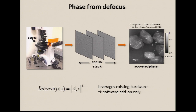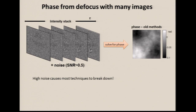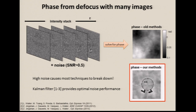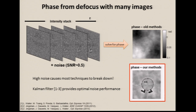Here's an example of a stack of images through focus from which I can recover phase. The old methods worked great with no noise, but when you add noise everything breaks down — these methods were inherently unstable. A big piece of my PhD was to put this in an estimation theory framework, using basic estimation theory tools like Kalman filters to solve for the optimal phase retrieval solution in a lot of noise. We used a complex Kalman filter, but a major problem: Kalman filters deal with covariance matrices, and with a million pixels the covariance goes as n², giving us a million-squared matrix — one image took 24 hours to run.